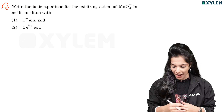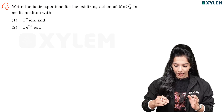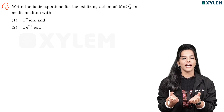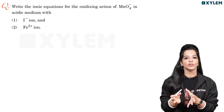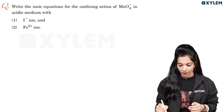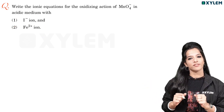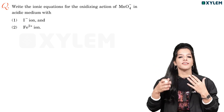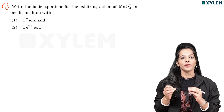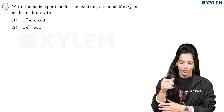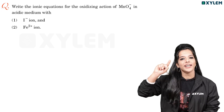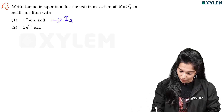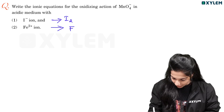Write the ionic equation for the oxidizing action of MnO4- in acidic medium with the iodide ion and ferrous ion. This is very important. We are discussing the oxidizing action of MnO4- in acidic medium — with the iodide ion, ferrous ion, bromine ion, and sulfate. It is very important as we discuss the oxidizing action of MnO4- in acidic medium.